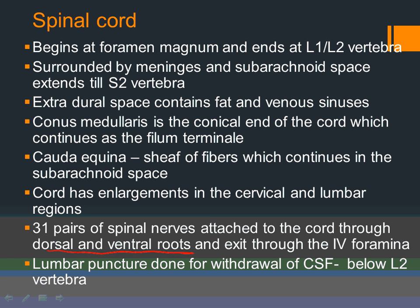A lumbar puncture — or spinal tap — is performed to withdraw cerebrospinal fluid or to inject spinal anesthetic, for example during labor. It must always be done below L2 vertebra because the cord ends at L1–L2. If done above, you could hit the cord. Below L2, you are in the cauda equina — the nerve fibers there are thin and move out of the way when the needle is inserted, so they are not damaged.